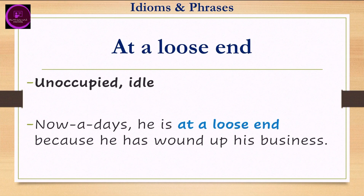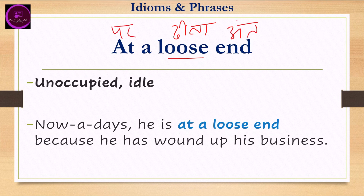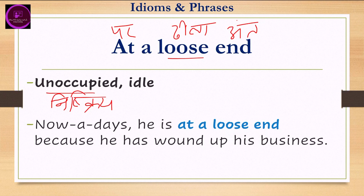Next is 'at a loose end.' Loose means 'dheela' (loose/slack), and end means 'ant' (end). So 'at a loose end' means unoccupied — someone who is not occupied in anything. It means 'niskri' or 'nirlipt' — idle, not engaged in any work.